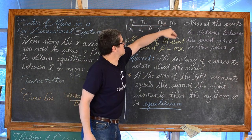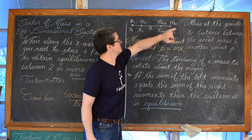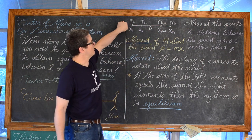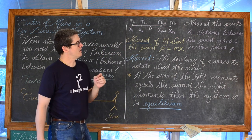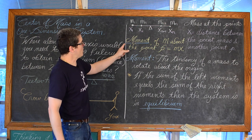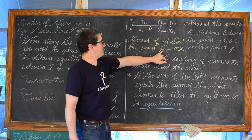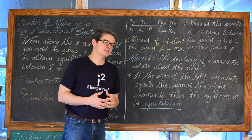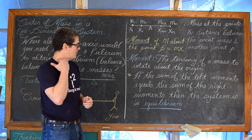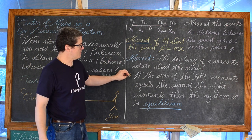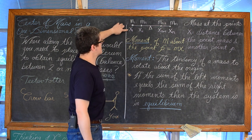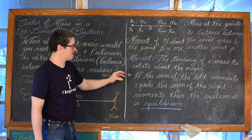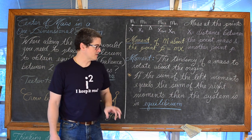We have this one-dimensional system, we have a fulcrum, and we have some point masses. These point masses — we're measuring the distance that they are away from some given point. So x is the distance between the point of a mass and another point p. A moment about the origin is calculated by taking the mass and multiplying it by the distance it is away from some point. The moment about the origin is defined as the tendency for a mass to rotate about the origin. If the sum of the left moments equals the sum of the right moments, then the system is going to be in equilibrium.